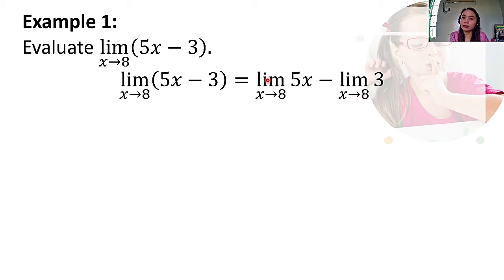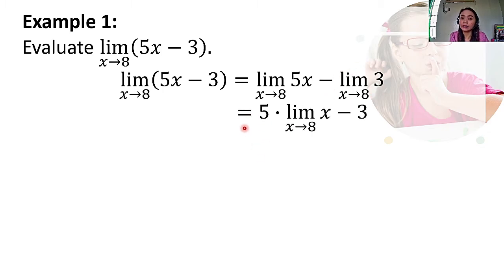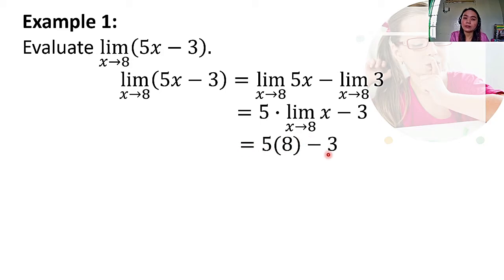Using the constant multiple theorem, the limit of 5X as X approaches 8 becomes 5 times the limit of X as X approaches 8. And the limit of the constant 3 is just equal to 3. So we get 5 times the limit of X as X approaches 8 minus 3. The limit of X as X approaches 8 equals 8, giving us 5 times 8 minus 3, which is 40 minus 3, equal to 37.